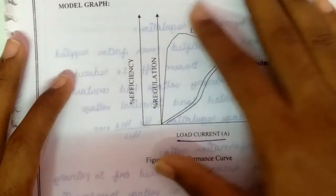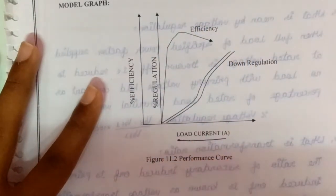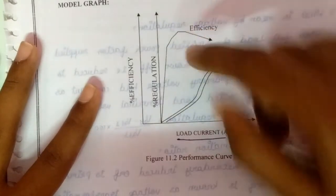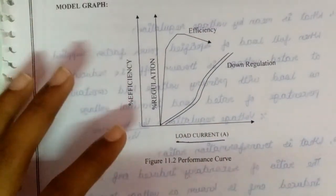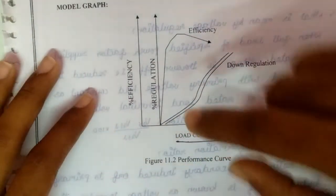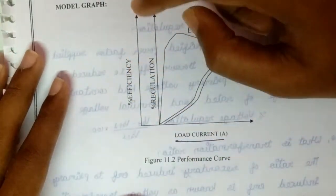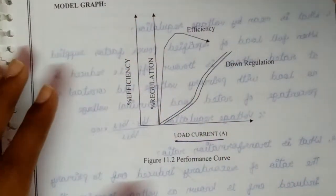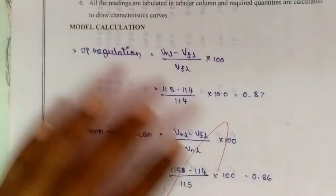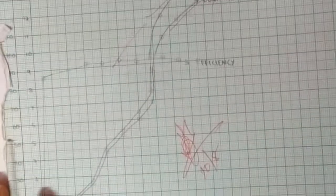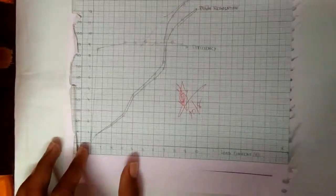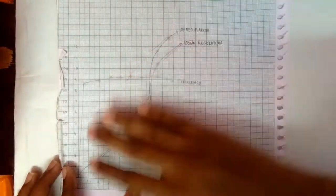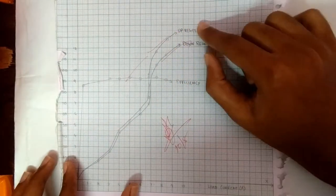After noting down all the values in the tabular column, we should draw a model graph. It's a performance curve, so the x-axis load current will be there and in y-axis percentage efficiency and percentage regulation. On plotting down all the points from the tabular column to the graph, the graph will look like this.